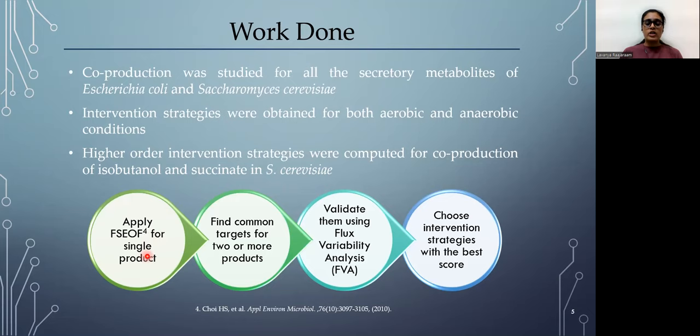The workflow goes like this: we apply the FSUF for a single product, identify common targets for two or more products, perform FVA to validate them, that is flux variability analysis, and then choose the best intervention strategies based on the score we compute.